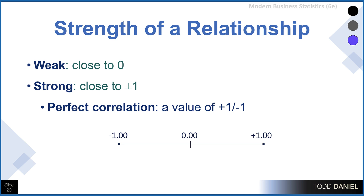The strength of the relationship is the absolute value of the correlation coefficient. Values close to zero are weak relationships. As values move closer to either positive one or negative one, they become stronger. A perfect correlation would be a value of either positive one or negative one.